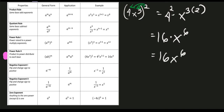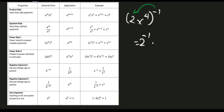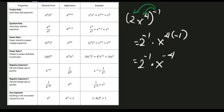Let's try example number 2 for power rule number 2: the quantity of 2x raised to 4, raised to negative 1. Distribute the negative 1 exponent to each base: 2 raised to negative 1, times x raised to 4 times negative 1. Simplifying: we get 2 raised to negative 1 times x raised to negative 4.